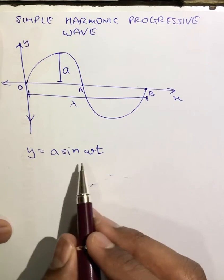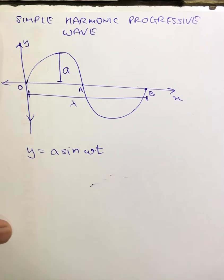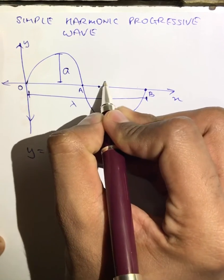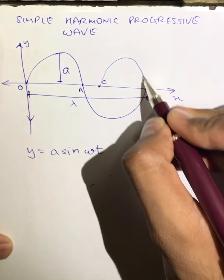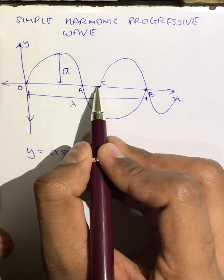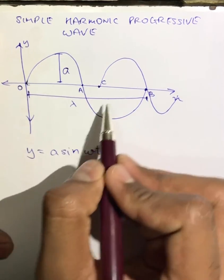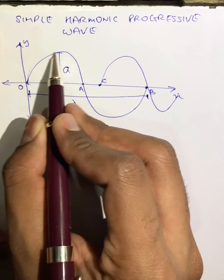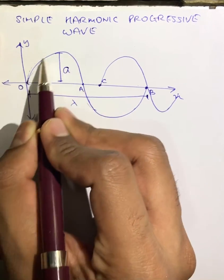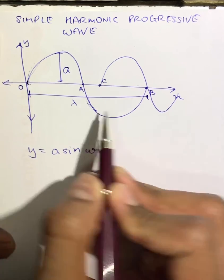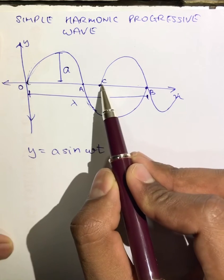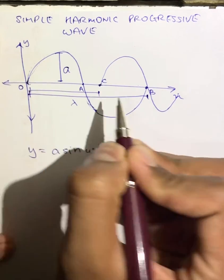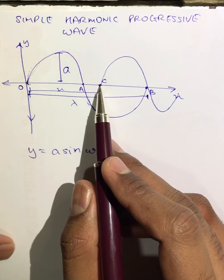Now suppose we have a wave which is starting from a point C. This wave starting from point C is lagging by a certain phase angle, because the first wave started earlier and this wave is starting late. So this wave is lagging behind the first wave by this much phase. This much phase of the wave is already covered by the previous wave, and after covering this much phase, the second wave starts.